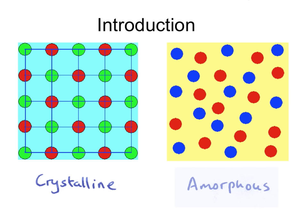A crystal basically has long-range order. That means that if I start off from this red atom, I know that I'm going to get another red atom once I've covered the distance equal to a repeat distance. No matter how long I carry on, I will see the same repeat pattern. There is long-range order in a crystal.